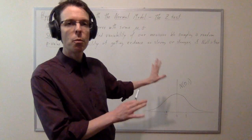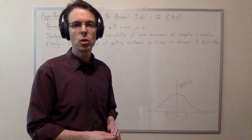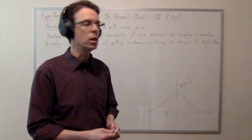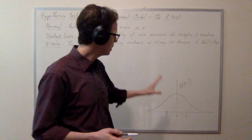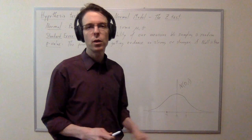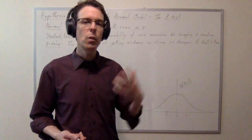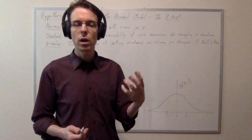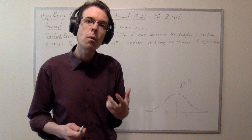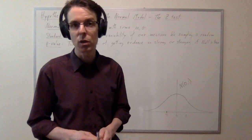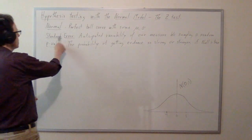It's the perfect and simplest distribution you could imagine. The z-test is based on the expectation that this is a good model for what happens when we draw a sample from a population and perform some measurement on it. That's what the normal distribution is all about.